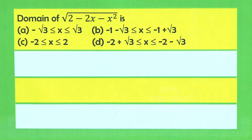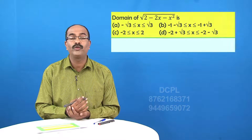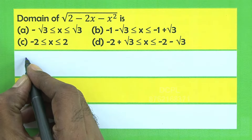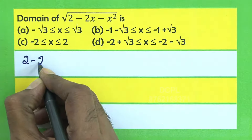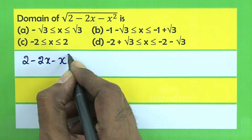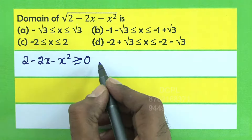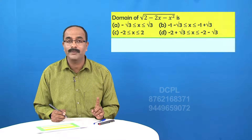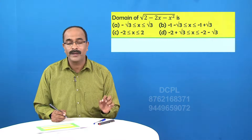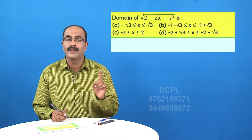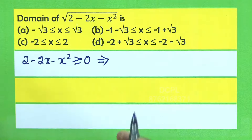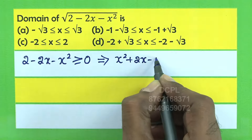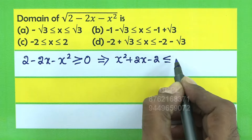Look at the next question. Find the domain of √(2 - 2x - x²). The expression inside the square root must be greater than or equal to 0, so 2 - 2x - x² ≥ 0. Multiplying by -1 and flipping the inequality, we get x² + 2x - 2 ≤ 0.